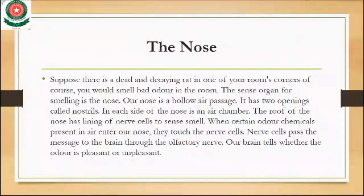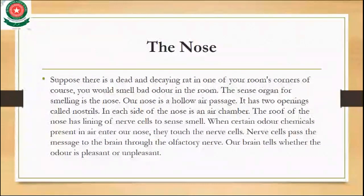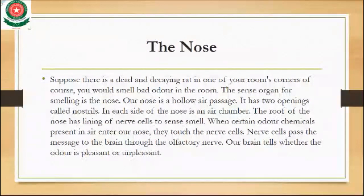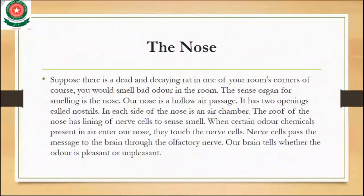In each side of the nose there is an air chamber, and the roof of the nose has a lining of nerve cells to sense smell. When certain odor chemicals present in the air enter our nose, they touch the nerve cells, which pass the message to the brain through the olfactory nerve. The brain then tells whether the smell is pleasant or unpleasant.